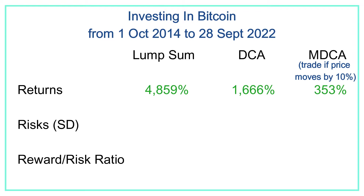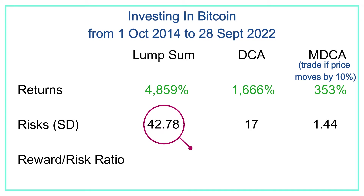On the face of it, the return for the lump sum investment strategy is clearly the most superior. However, if we look at the risks involved with each of these strategies, the picture might become a bit different. The risk shown here is measured by the standard deviation of daily returns. Clearly, simply investing in a lump sum involves the highest amount of risk, because you are having to ride the market up and down, which can be really wild. But using Time-Based DCA or Movement-Based DCA, you can mitigate that risk significantly.